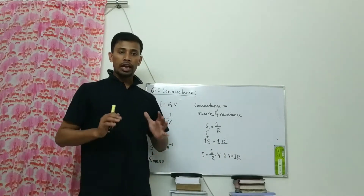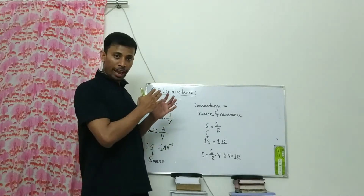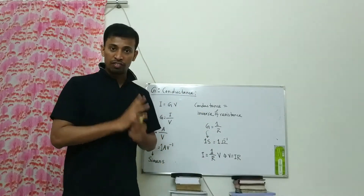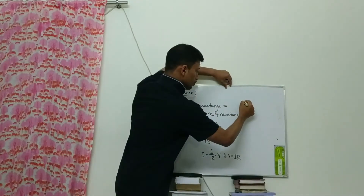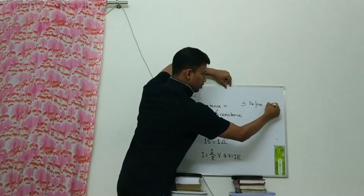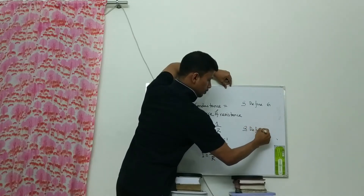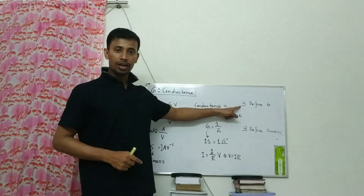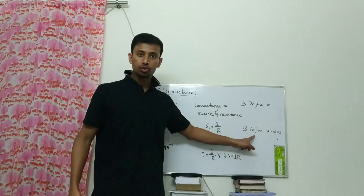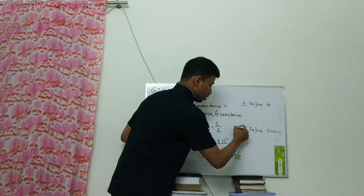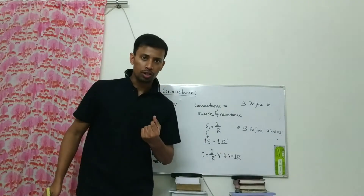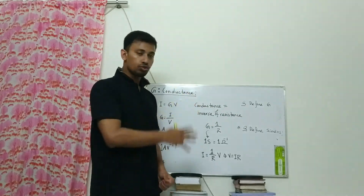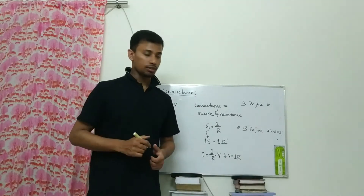From this section, two definitions appear. Definition 1: define G, that means conductance. Definition 2: define Siemens, that means the unit. The second definition is comparatively less important than the first one. I will give you the exact definition in the next class.